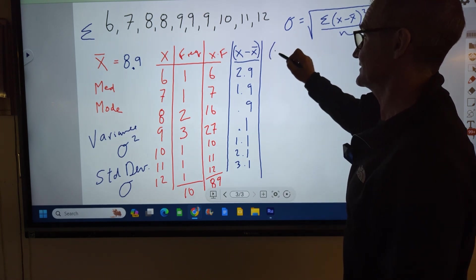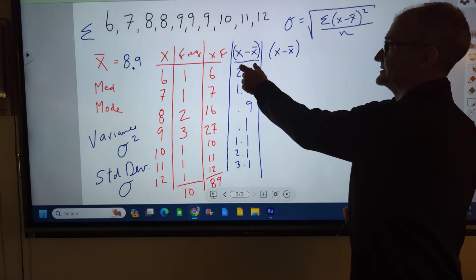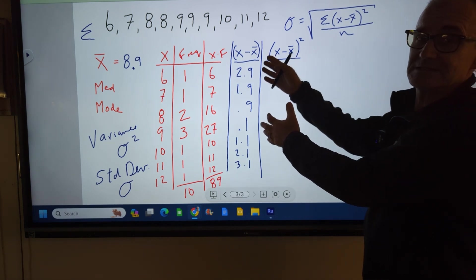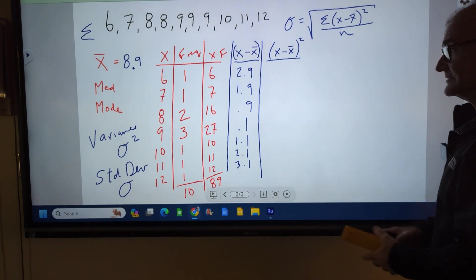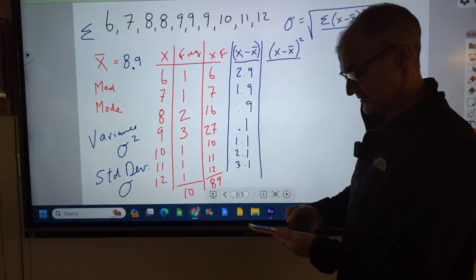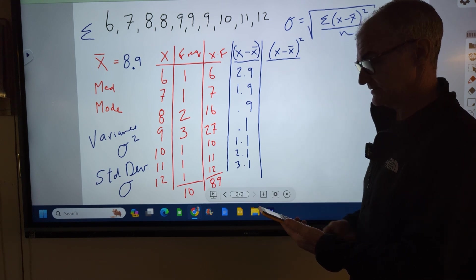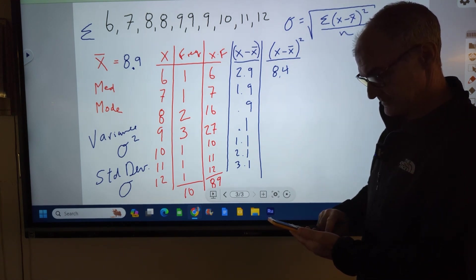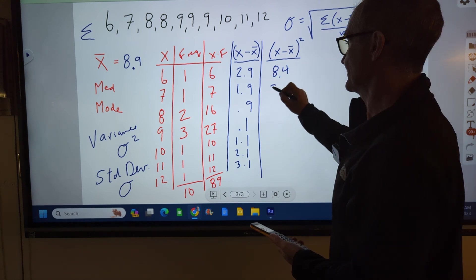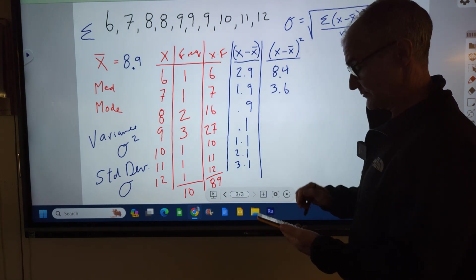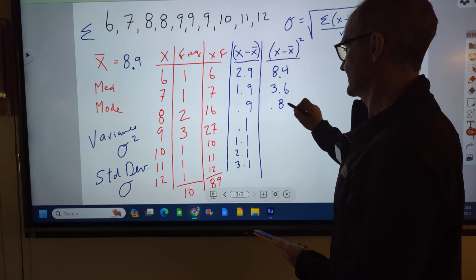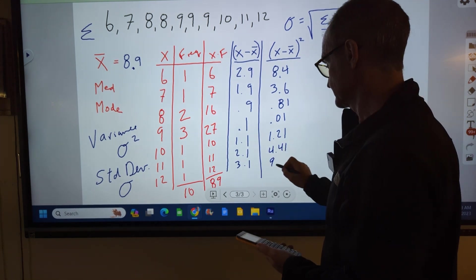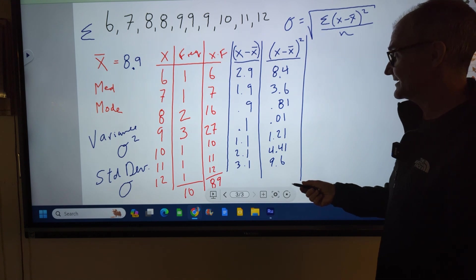Then I'm going to create a deviation squared. How far are you from the average? And then we're going to square it. The main reason we square it and then take the square root of it is really to take away all of the negatives. So I'm going to do this with my calculator. So I have 2.9 squared, 8.4. 1.9 squared, 3.6. 0.9 squared, 0.81. 0.1 squared, 0.01.